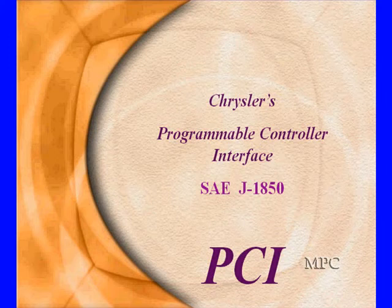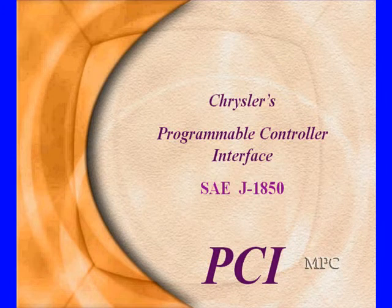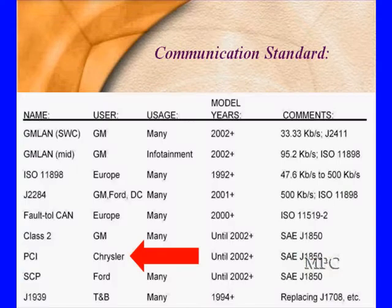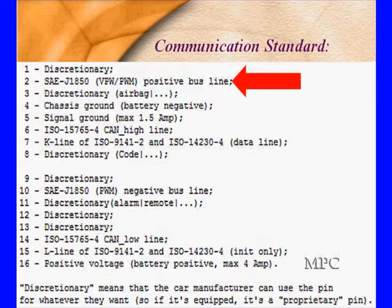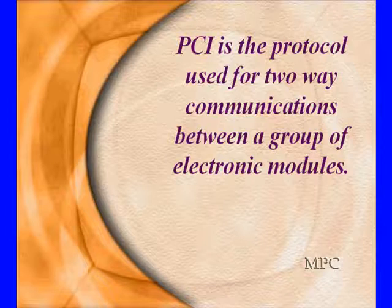We're going to talk about Chrysler's programmable controller interface. It's a J1850 specification and is used by other vehicles as well. In this particular case, it's used up until about 2002 where Chrysler started changing over to CAN. It stays on pin 2. It's pulse width modulated.